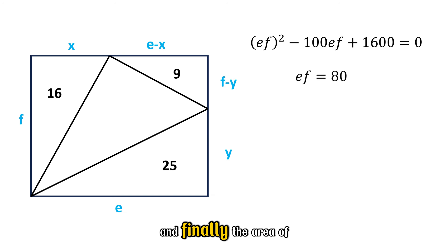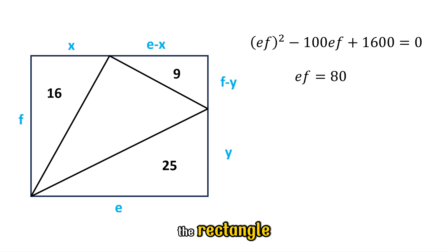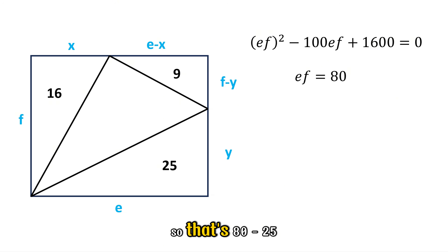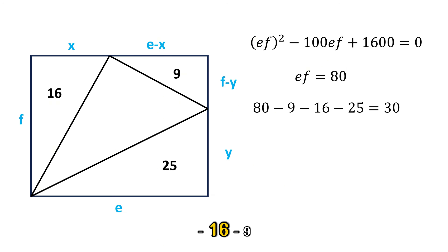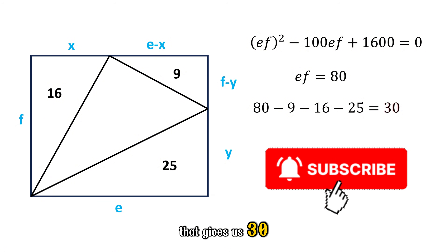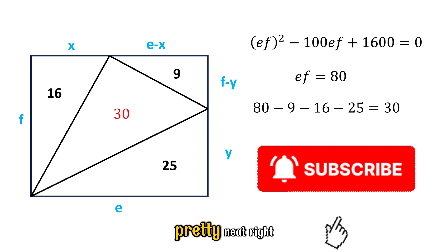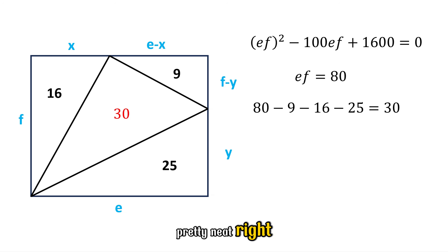And finally, the area of the middle triangle is the total area of the rectangle minus the three triangles we already know. So that's 80 minus 25 minus 16 minus 9, which gives us 30. So the middle triangle has area 30. Pretty neat, right?